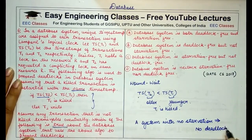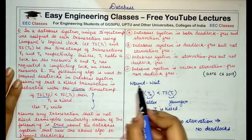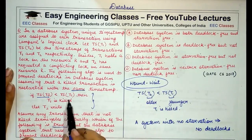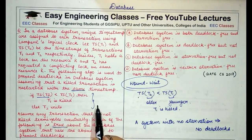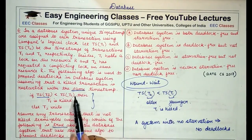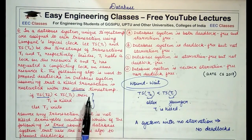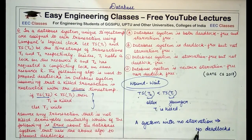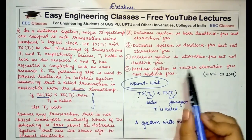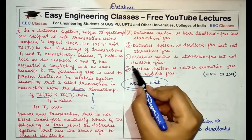T1 will eventually get hold of the resource, because once T1 is killed and restarted, it becomes older compared to other transactions fighting for the same resource. So T1 will never starve, and any transaction that was initially killed will never starve. A system with no starvation implies there is no deadlock. In this wound-wait timestamp ordering scheme, the system will be both deadlock-free and starvation-free, so the correct answer is D.